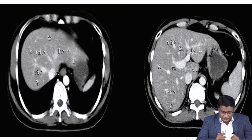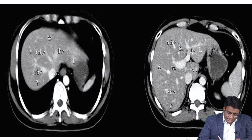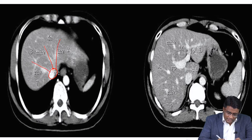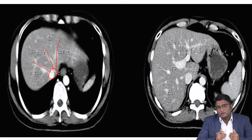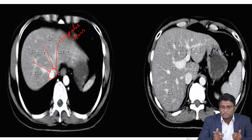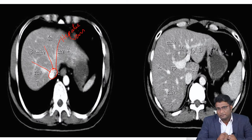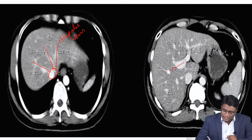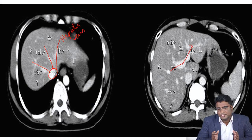Please look at this image. This is the inferior vena cava, and you can see these vessels converging towards the inferior vena cava — these are your hepatic veins. This is how the hepatic veins appear: they converge onto the inferior vena cava, whereas the portal vein travels transversely in the liver.